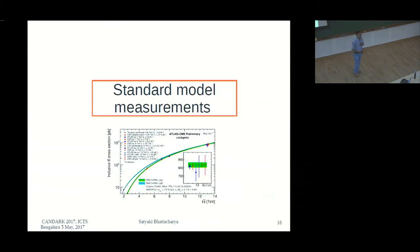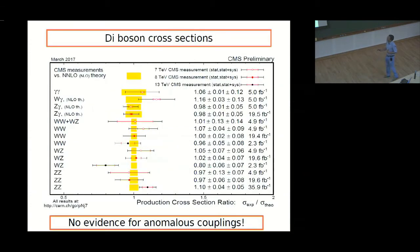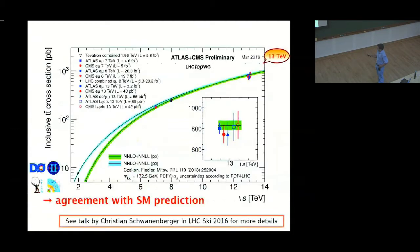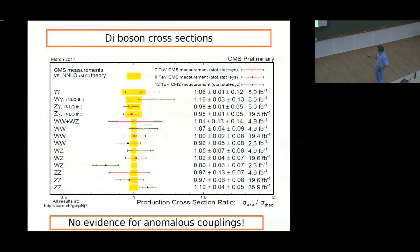I start with a couple of results from the standard model. This is our diboson updated results measured in a whole bunch of channels. The number here is ratio of sigma in the experiment divided by sigma expected from theory. Everything, except maybe here, matches very well with standard model. No evidence for anything anomalous here.